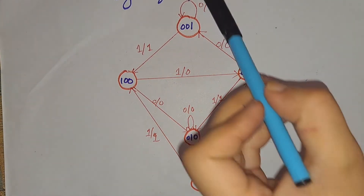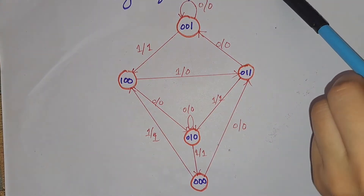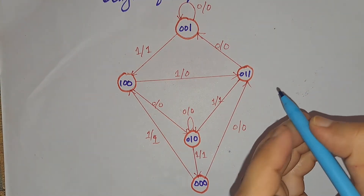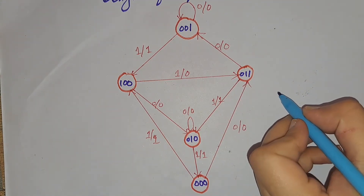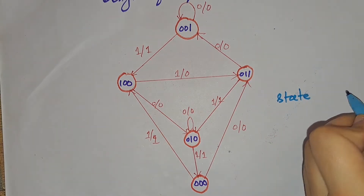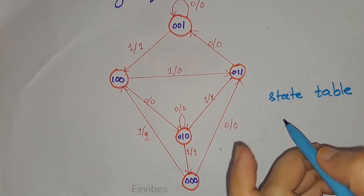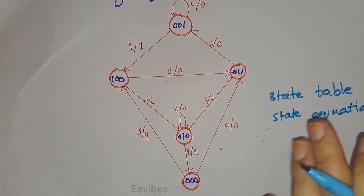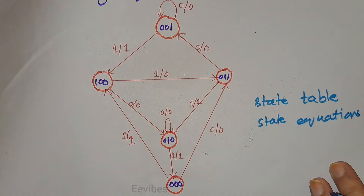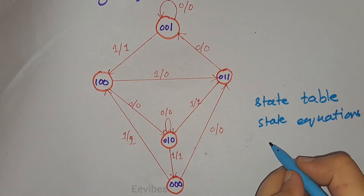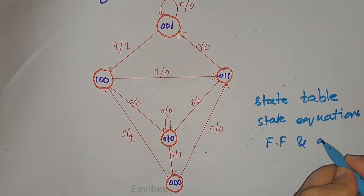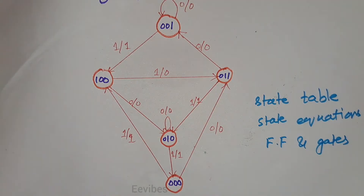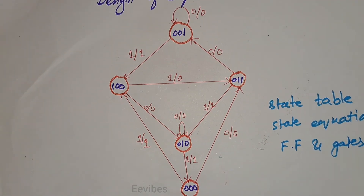Hi everyone, this is Asma Mushtaq from the Double Wipes, and in this tutorial we are going to design a sequential circuit whose state diagram is given in the figure. Whenever you have the state diagram of a particular circuit and you have been asked to design the circuit from it, the first step is to construct the state table. From the state table you develop the state equations, and finally you implement the circuit using flip-flops and gates.